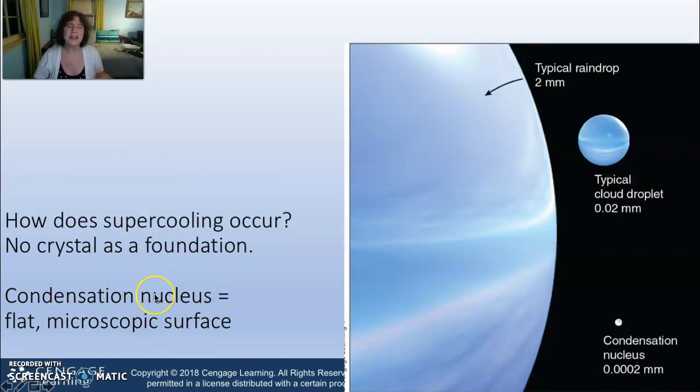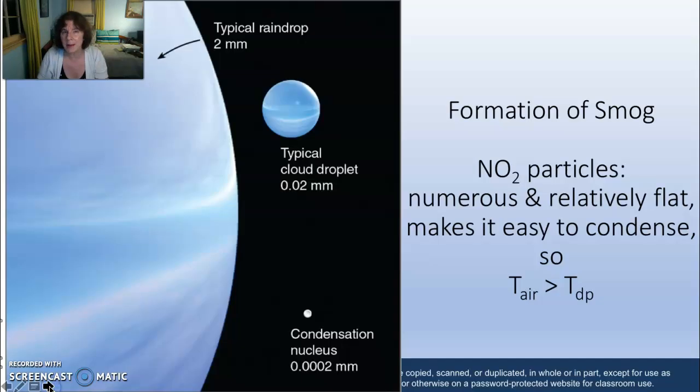Those crystals are called condensation nuclei - the flat microscopic surface. This is two ten-thousandths of a millimeter - you can't see it. These are dust particles that you can't see in the air, and they provide a platform for the even smaller water droplets to grow and grow on to become a typical water drop.